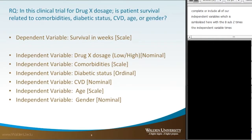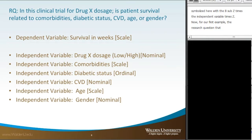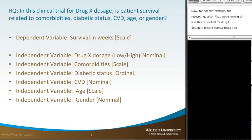For our first example, the research question is: in this clinical trial for drug X dosage, is patient survival related to comorbidities, diabetic status, cardiovascular disease, age, or gender? Our dependent variable is survival in weeks, which is measured on a scale.